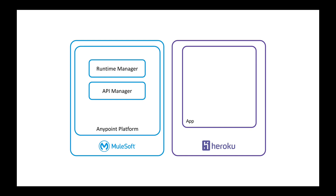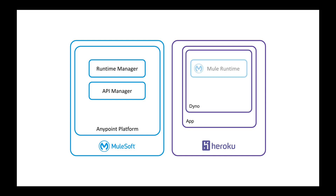We're going to register that runtime against Runtime Manager. And I'll also talk briefly about how you can deploy applications into Heroku and expose those through the app platform. For this demonstration, I'm going to spin up a dyno in Heroku, deploy a Mule runtime into that dyno, and then register it against the Runtime Manager so I can deploy new applications into that runtime. Additionally, within Heroku you also have the ability to scale up and scale down your dynos, and the script I have set up will allow you to spin up another Mule runtime and register that against the Runtime Manager.